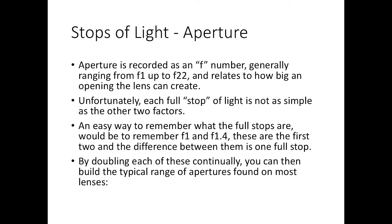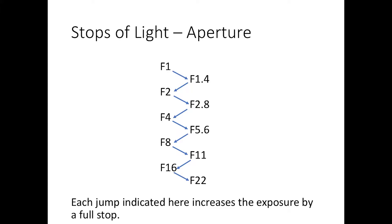The trick is to remember F1 and F1.4, then continually double each of them to build a chart representing each aperture that creates a full stop of difference. Starting at F1, doubling gives F2, F4, F8, F16. Starting at F1.4, doubling gives F2.8, F5.6, F11, F22. Each step on this chart — F1 to F1.4, F1.4 to F2, F2 to F2.8, and so on — represents a decrease in exposure by one full stop, because the higher number is a narrower aperture that lets less light in.